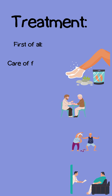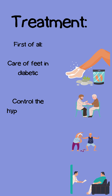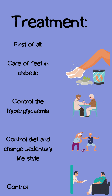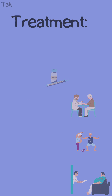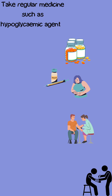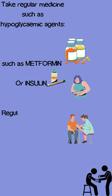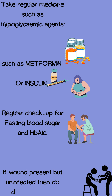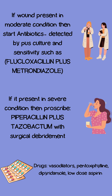Treatment: first, care of feet in diabetics; control hyperglycemia through diet, lifestyle changes, and obesity control; take regular medications such as hypoglycemic agents like metformin or insulin; regular checkup for fasting blood sugar and HbA1c. If wound is present but uninfected, do daily dressings. If wound is moderate, start antibiotics as detected by pus culture and sensitivity, such as flucloxacillin plus metronidazole.